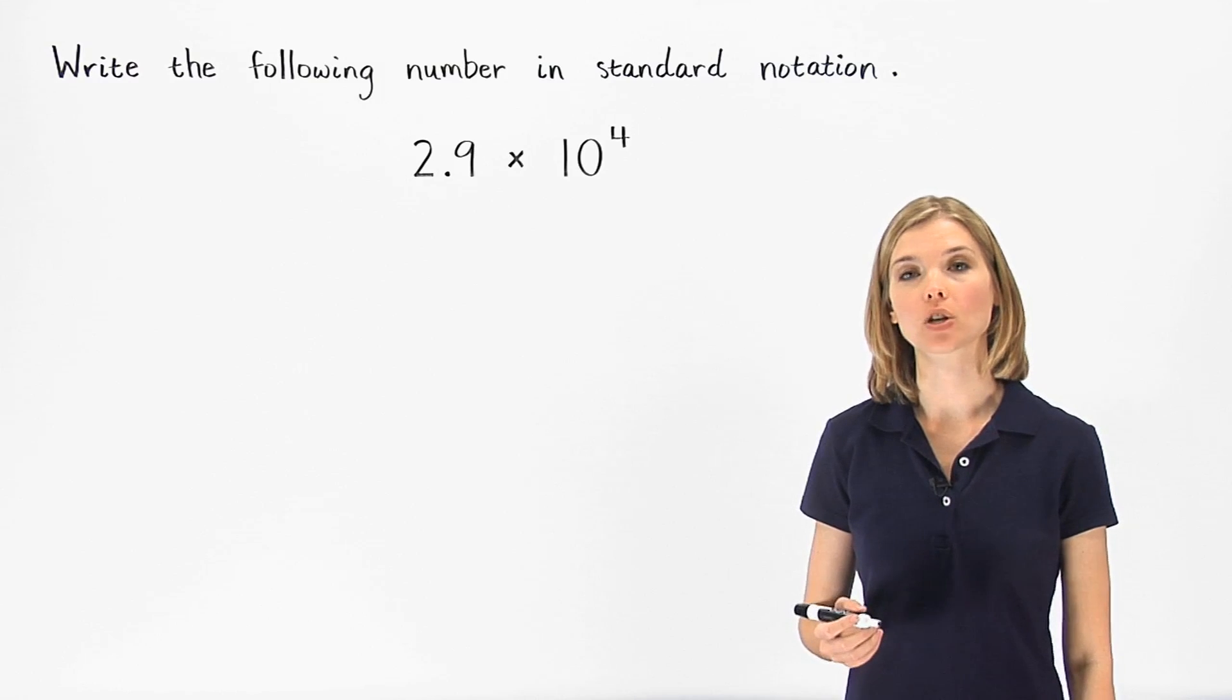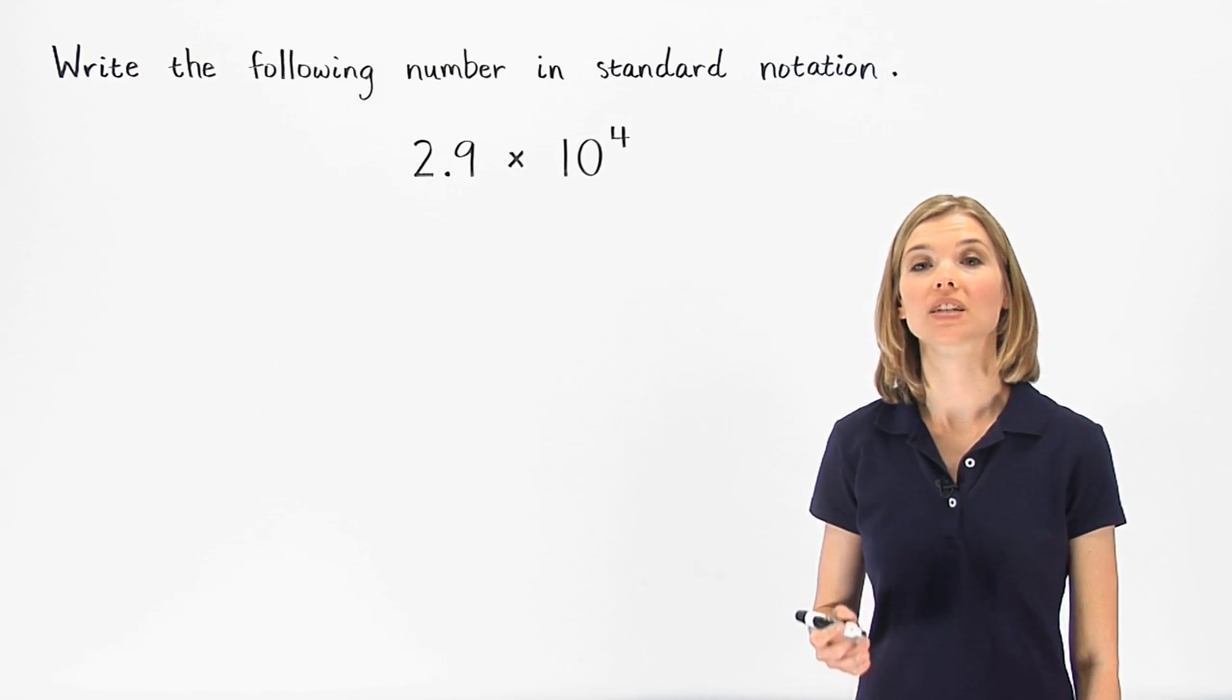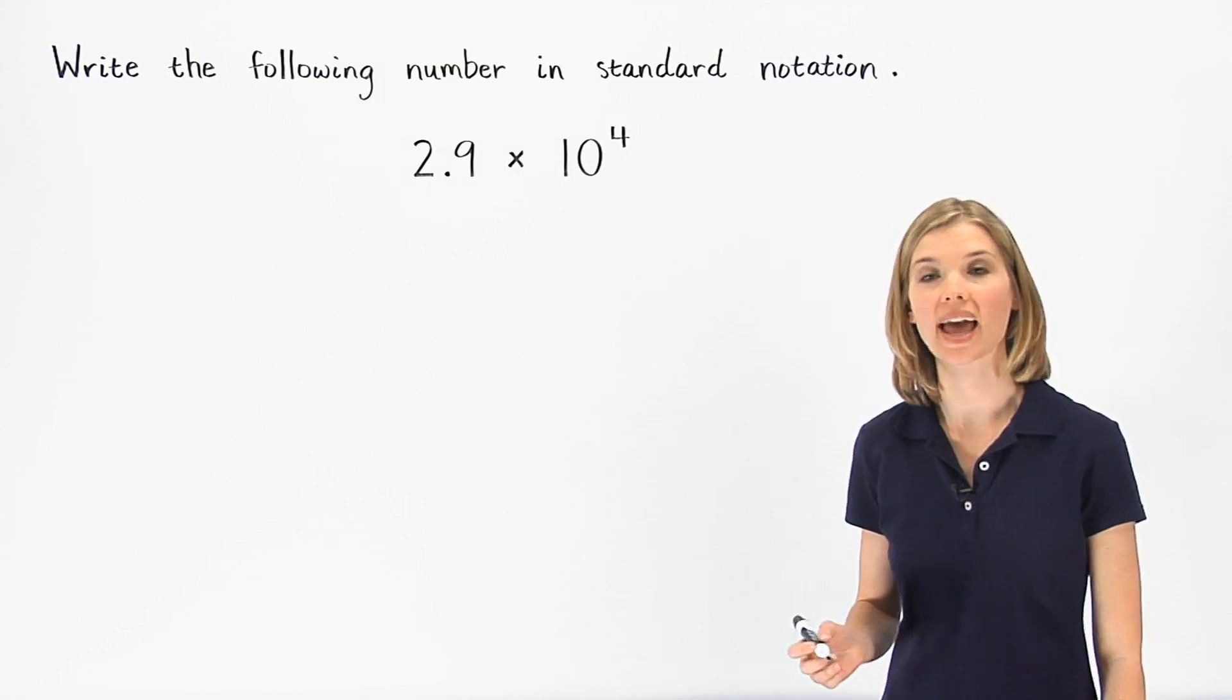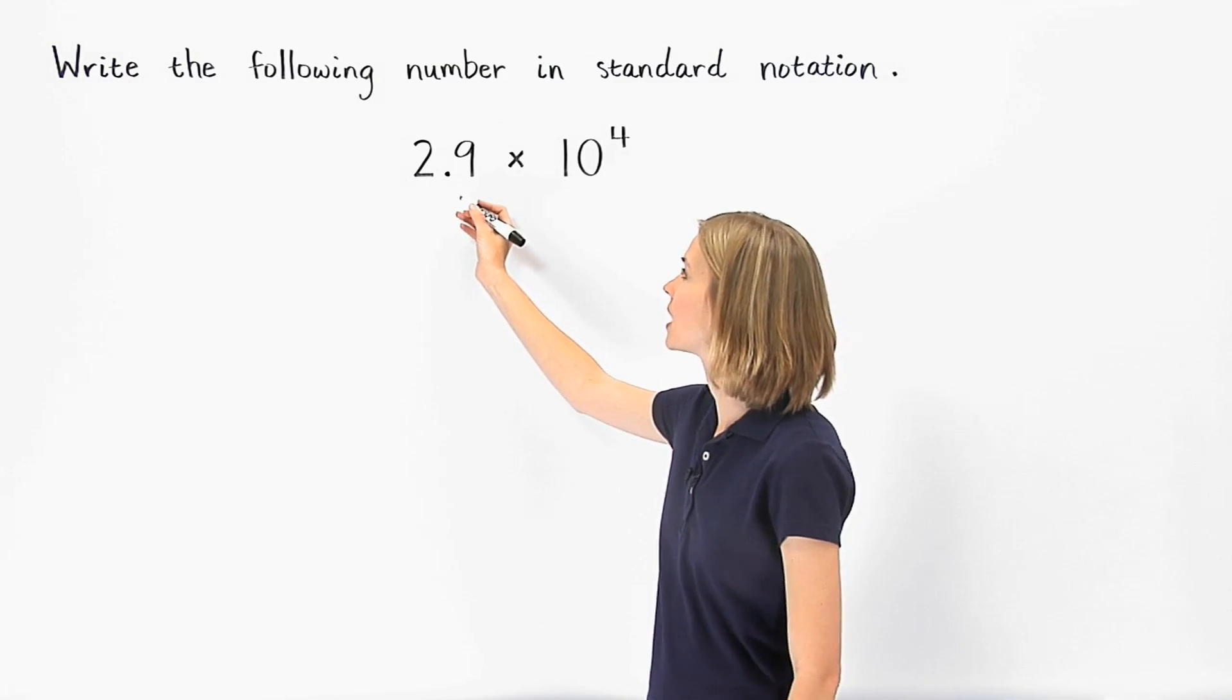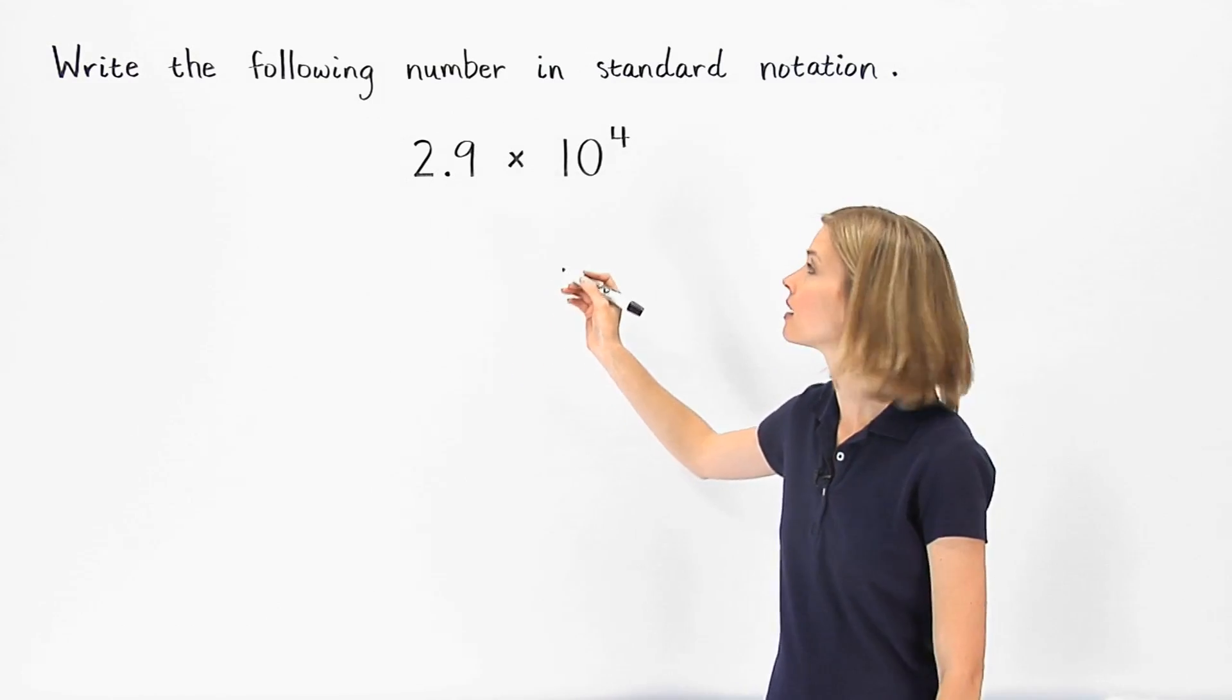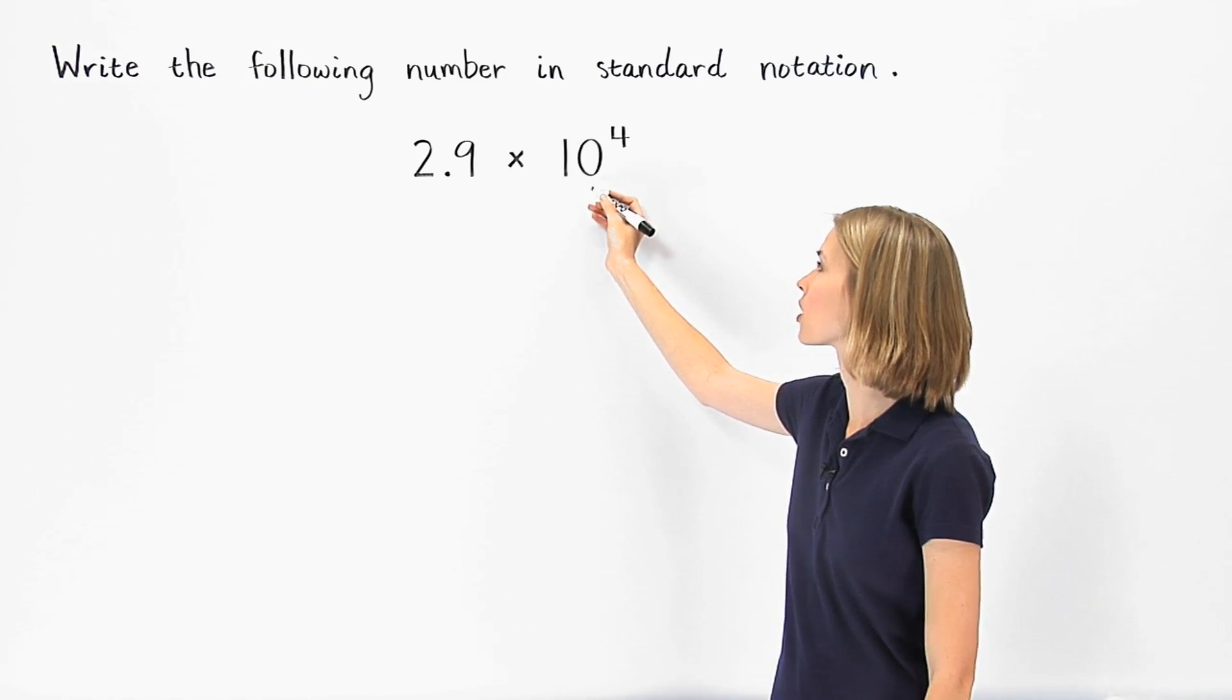A number is written in scientific notation if it's composed of a decimal between one and 10, in this case 2.9, times a power of 10, in this case 10 to the fourth power.